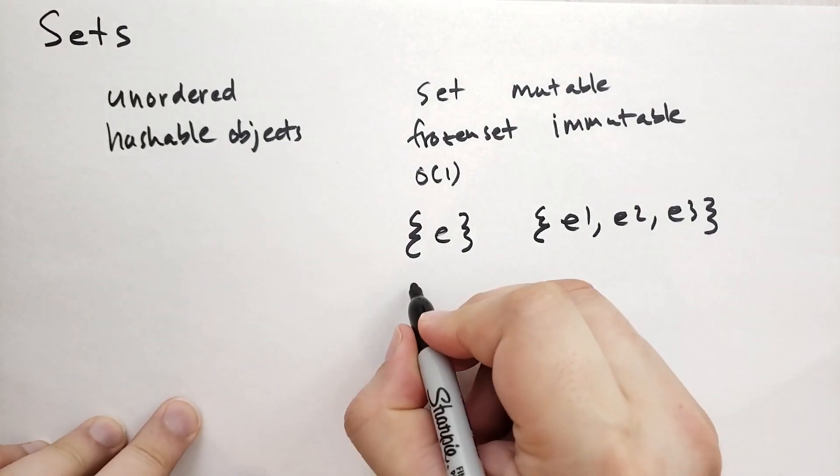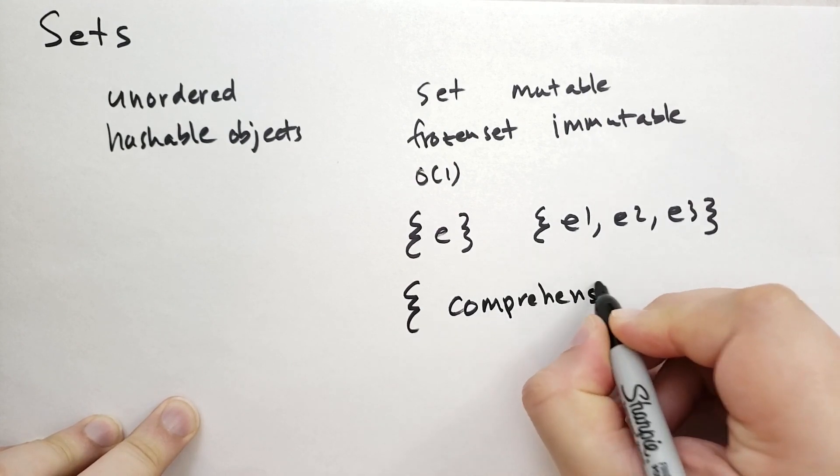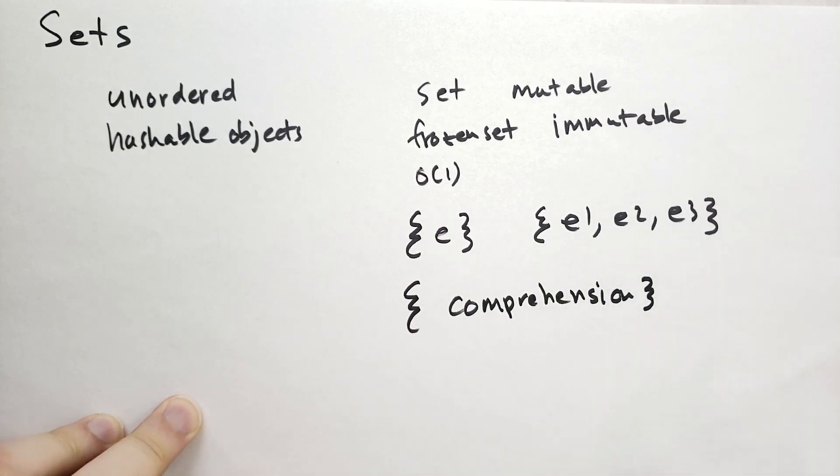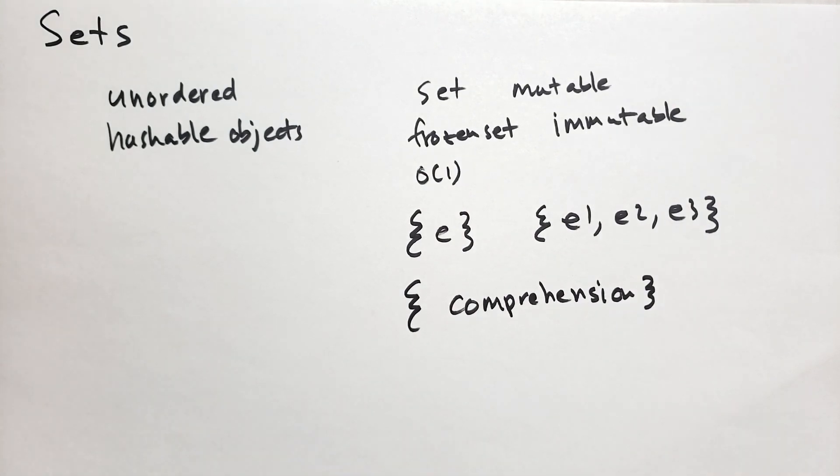You can also do a set comprehension. Set comprehension behaves just like a list comprehension except it creates a set from the result. Note that in a dictionary comprehension, the expression is actually a key value pair, but in a set comprehension, it's a simple value.